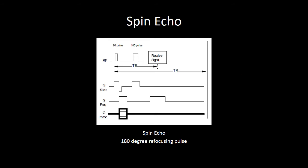Let's look at a spin echo sequence diagram. The various lines in this diagram represent both our radio frequency pulses and the gradients we are using to generate our image. The first line is labeled RF, and that represents our radio frequency pulse. For a spin echo sequence, you will always see a 90-degree pulse that occurs at the same time that the slice select gradient is turned on. The slice select gradient is represented by that first line that will be active during the 90-degree pulse.